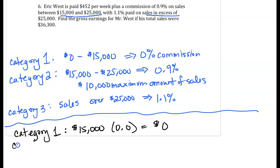In Category 2, remember we said there was a maximum of $10,000 in that commission category? And since we are selling $36,300 in sales, we're definitely in Category 1 because we've made it to $15,000. We're definitely using all of Category 2 because we're above $25,000. And then in Category 3, we'll have to figure out how much sales goes in that category.